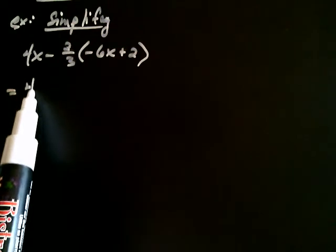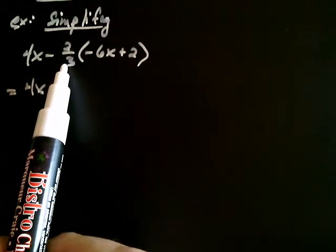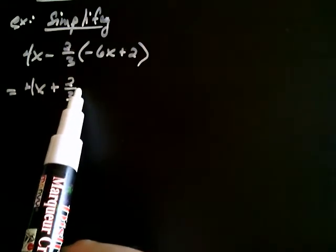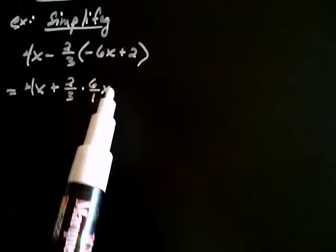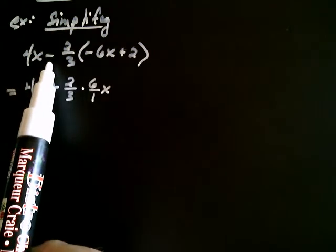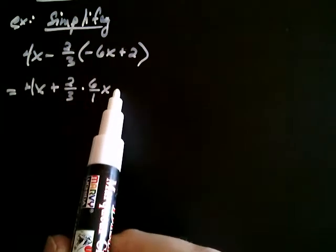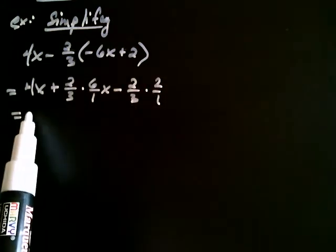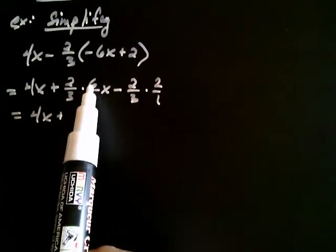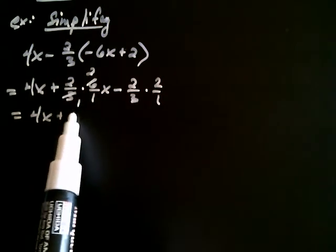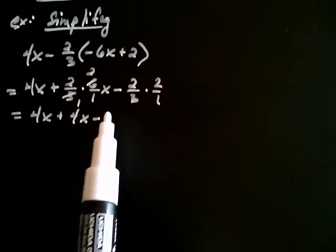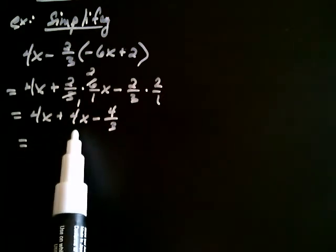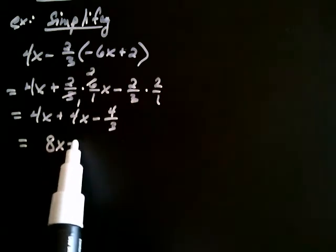4x remains the same. Negative 2 thirds times negative 6 is a positive — a negative times a negative is a positive. Whatever I get when I multiply 2 thirds by 6 over 1 times x. Then, negative 2 thirds times positive 2 — a negative times a positive is a negative — gives 2 thirds times 2 over 1. So I get 4x plus, 3 goes into 6 twice and 2 times 2 is 4, so plus 4x, minus 4 over 3.